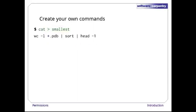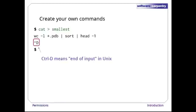Type in this line: 'wc -l *.pdb | sort | head -1'. You may remember this as the pipe we constructed in the previous episode to find the smallest molecule file. After pressing Enter to end the line, type Ctrl-D. You should immediately get a new shell prompt. Ctrl-D means end of input on Unix — it's how we tell cat, or any other program, that there's nothing more coming from the keyboard. The equivalent on Windows is Ctrl-Z.